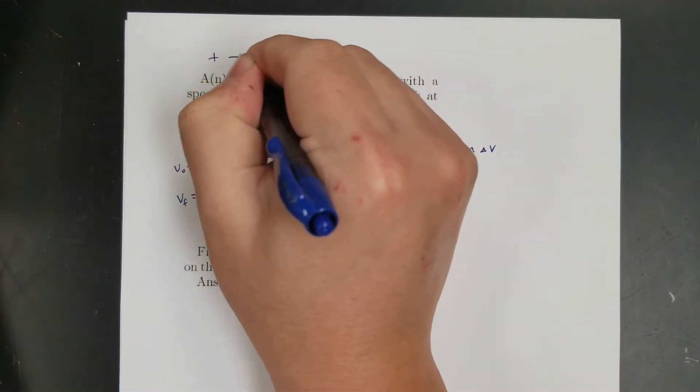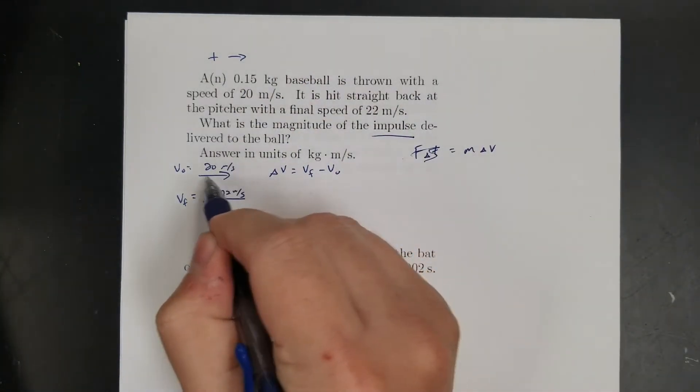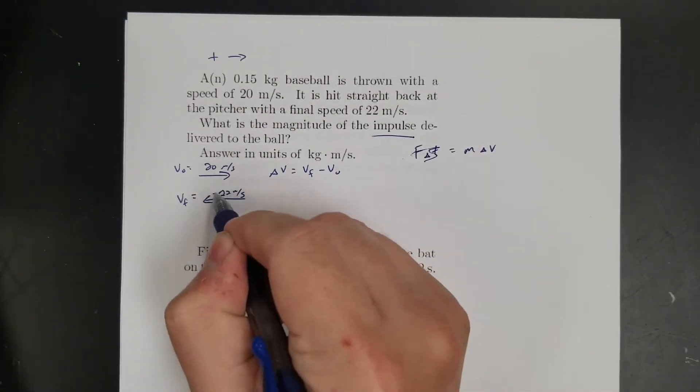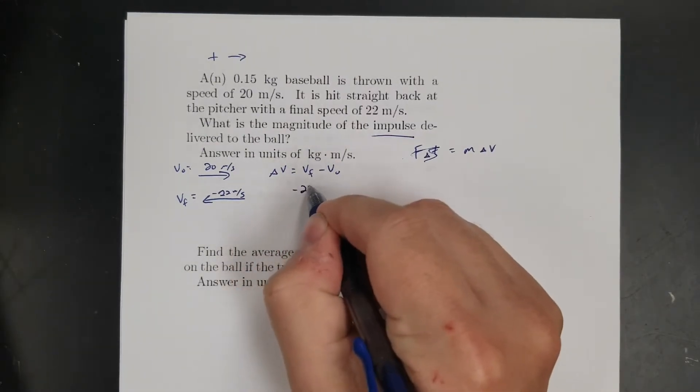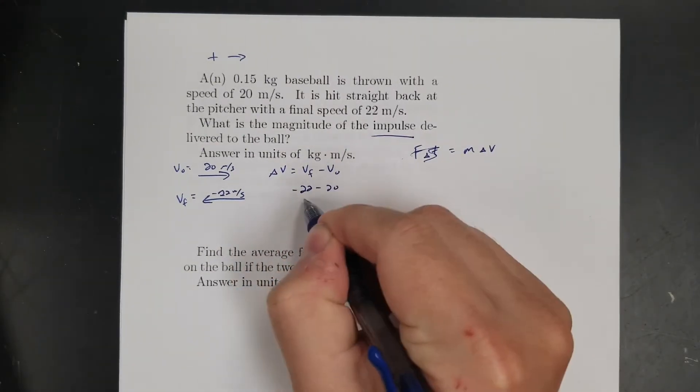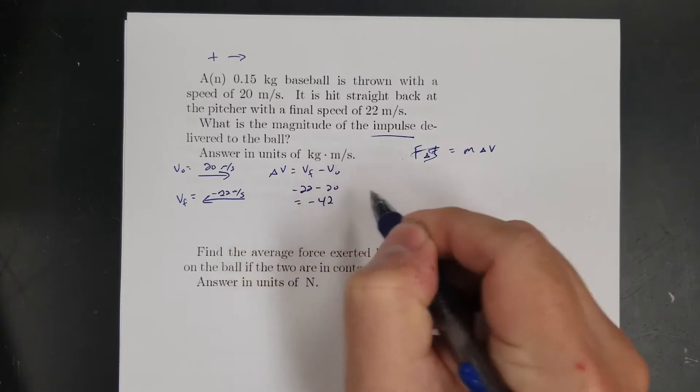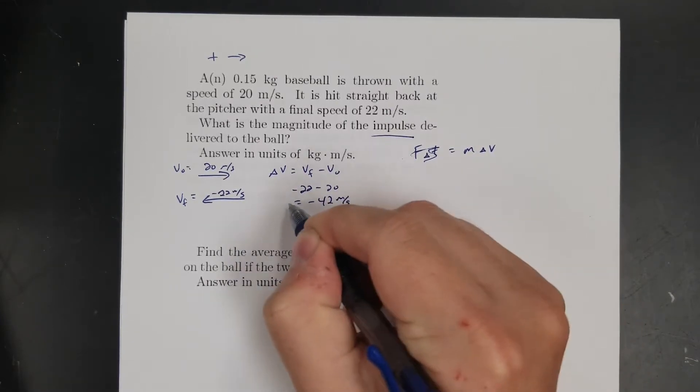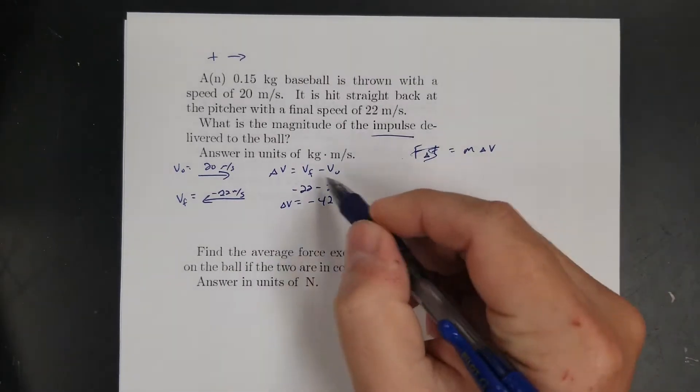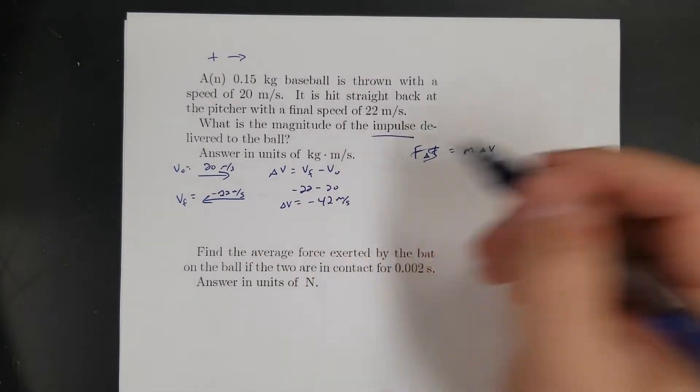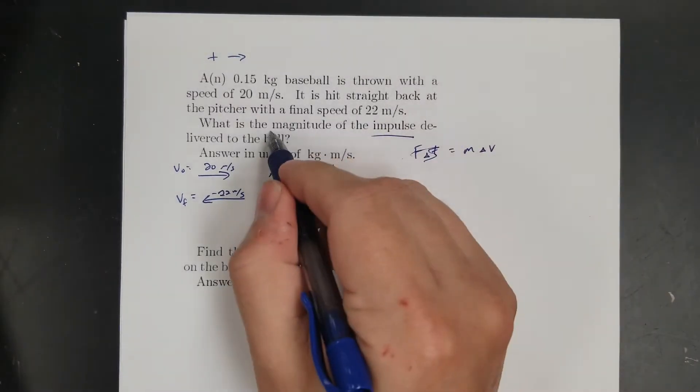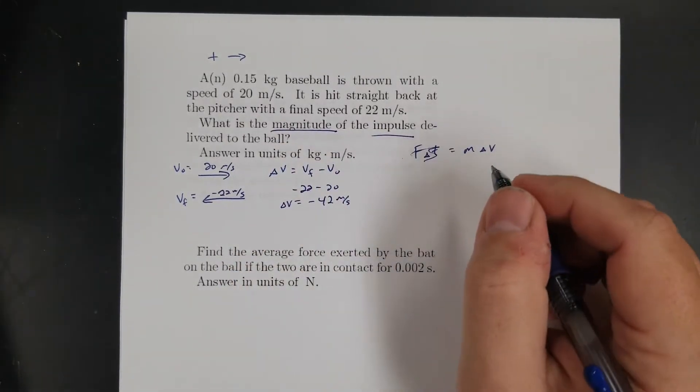That means this number's positive. This number's got to be negative. So if I do negative 22 minus 20, that gives me negative 42 meters per second. That's my change in velocity. So see how it ended up just becoming the sum, right? So my change in velocity is 42 meters per second, right? Because I just want magnitude, so I don't really care about the negative sign anymore.